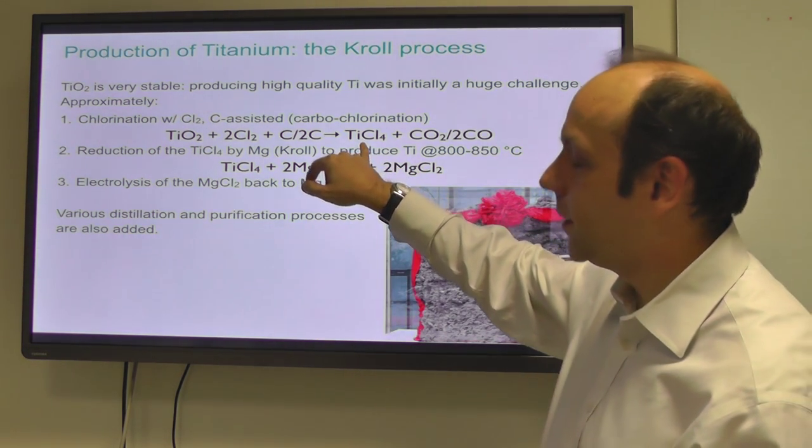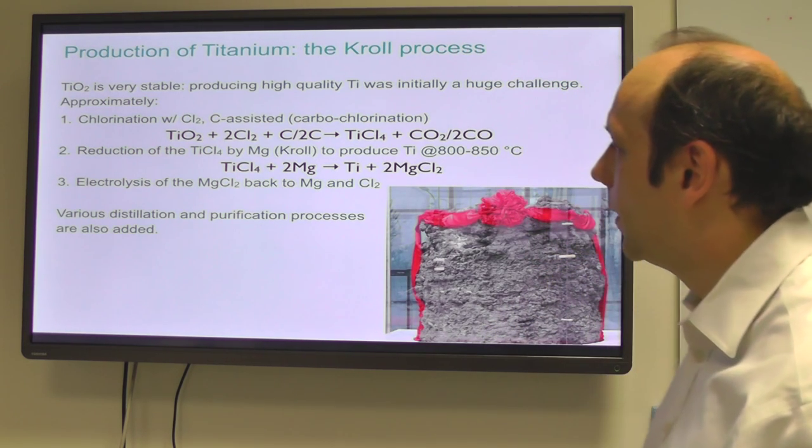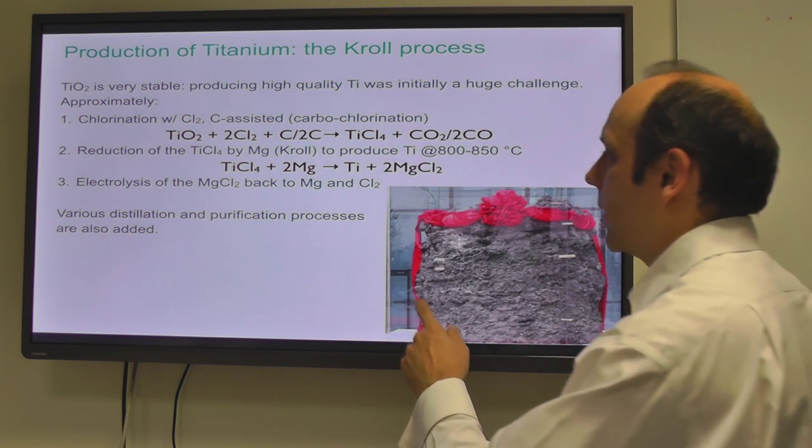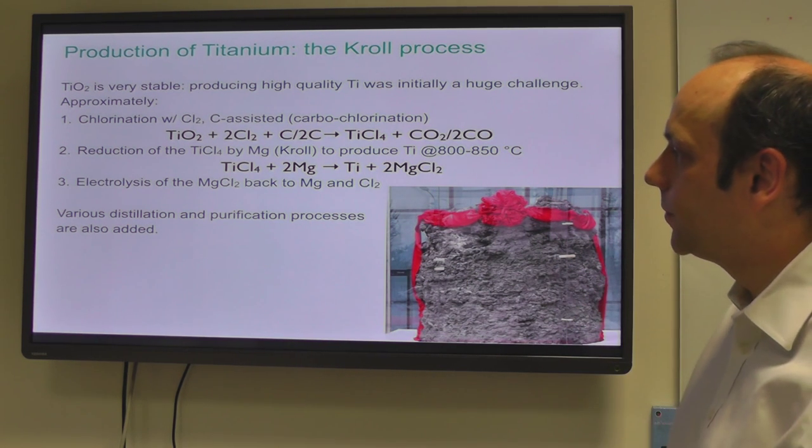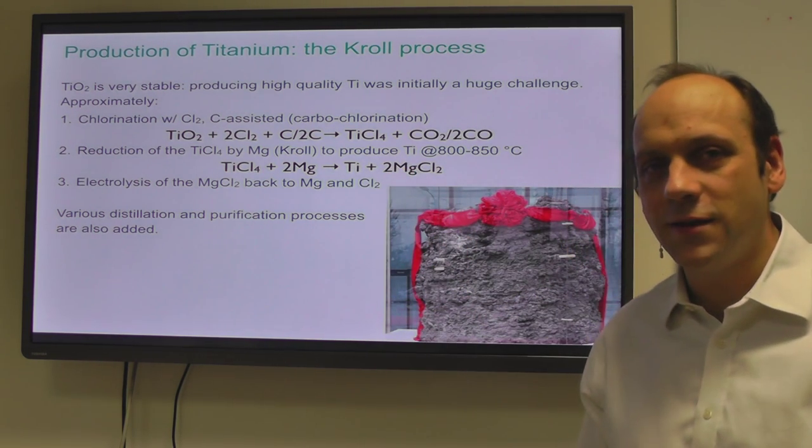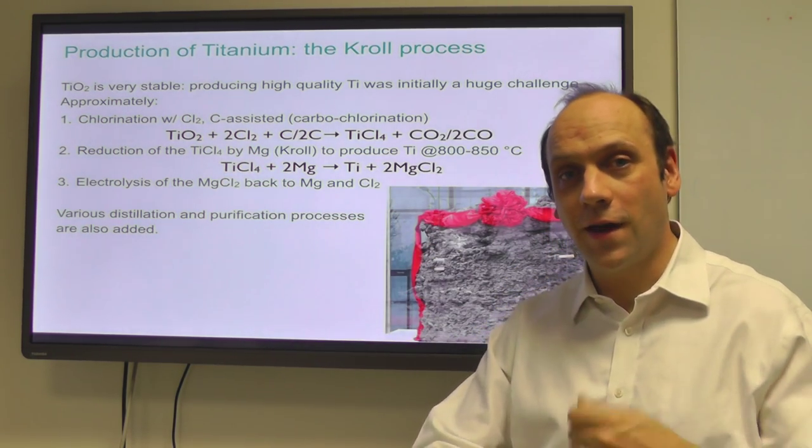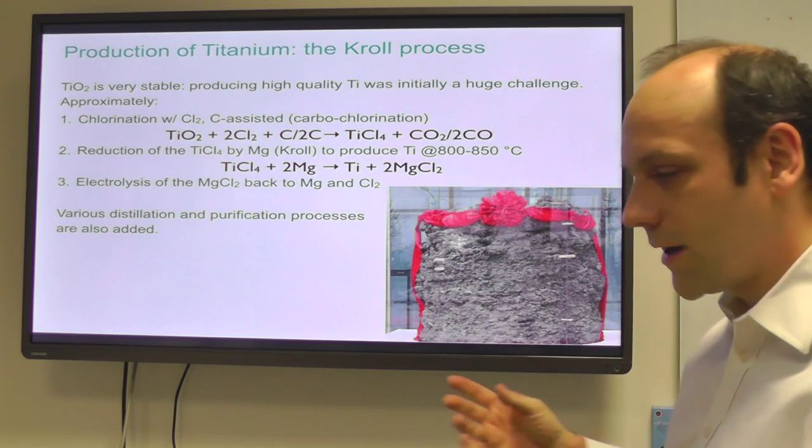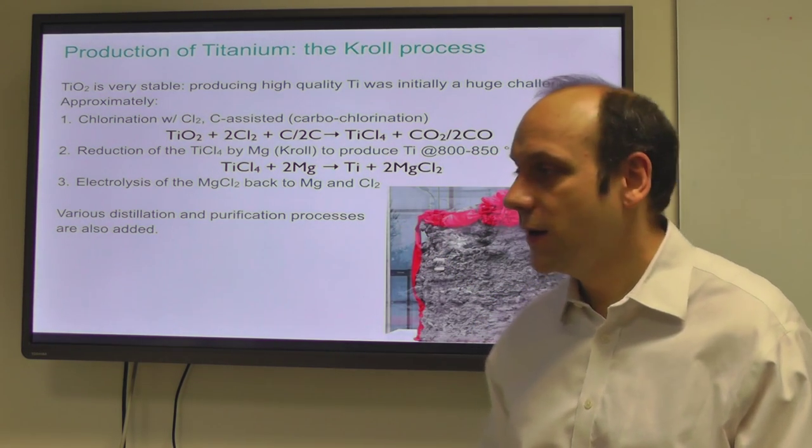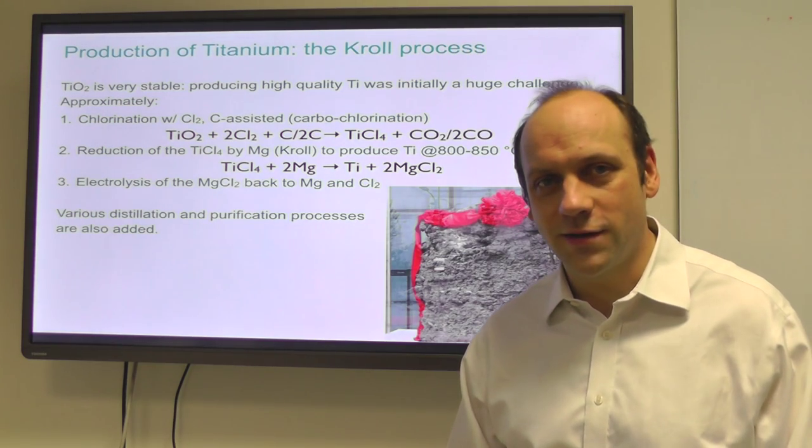Then, having got our TiCl4, our titanium tetrachloride, we reduce that by putting it in a reactor and flowing magnesium over it. We do that at quite a high temperature, 800-850 degrees C. That makes titanium and magnesium chloride, so we reduce the titanium with magnesium. This is the starting product for a magnesium process, so we then electrolyze that to go back to making our magnesium and chlorine, so they go round and round in a closed loop. We also add distillation and purification processes because we still end up with some chlorine in our product.